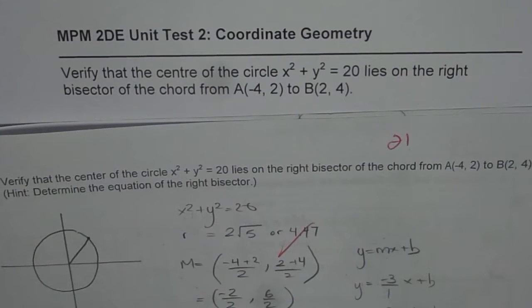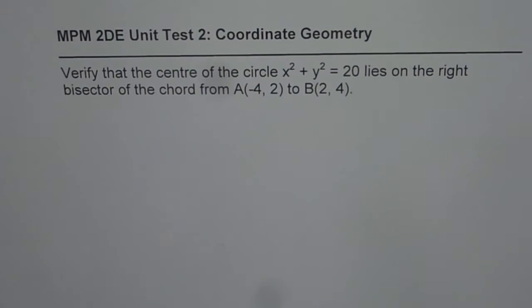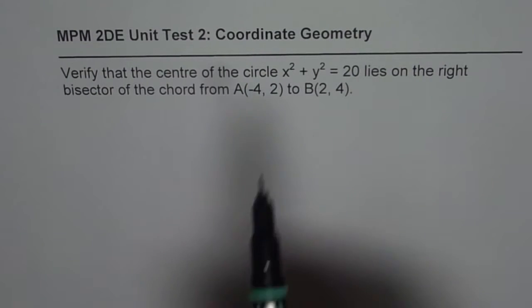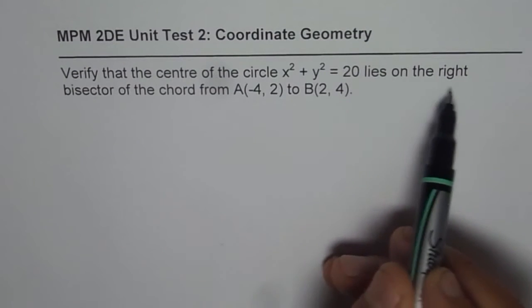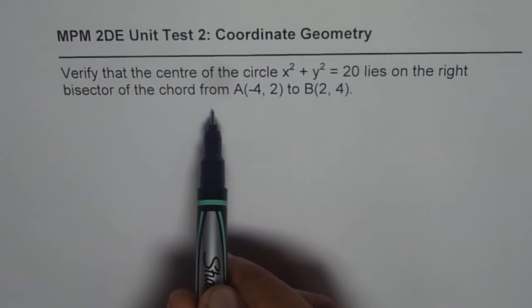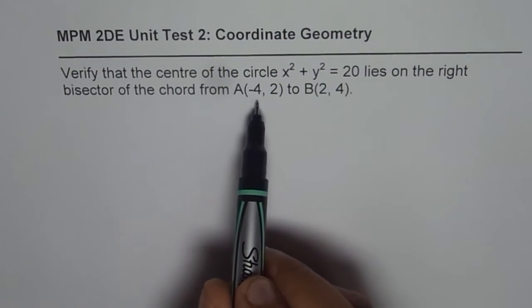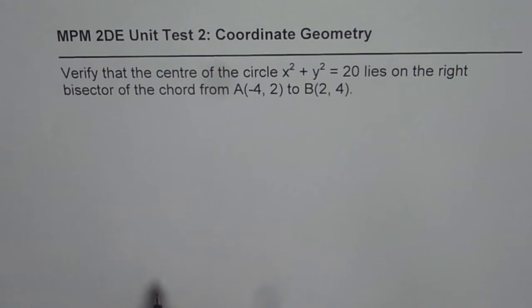I'm Anil Kumar sharing with you a test paper of my student, IB grade 10 coordinate geometry. The question here is: verify that the center of the circle x² + y² = 20 lies on the right bisector of the chord from A to B, where A is (-4, 2) and B is (2, 4). You can pause the video, answer the question, and then look into my suggestion.